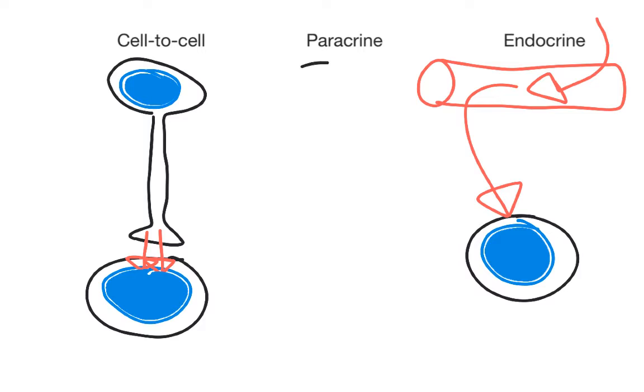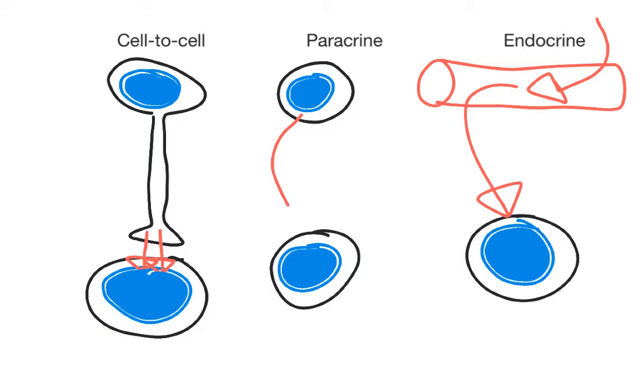With paracrine signaling, cells release chemicals that diffuse a short distance away to act on nearby cells. We saw a number of examples of this in the first term anatomy class. Inflammation was one example. Damaged cells can release prostaglandins, which diffuse a short distance away to act on nearby arteries, causing vasodilation. This, in turn, led to redness and swelling that we see with the inflammatory response.